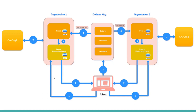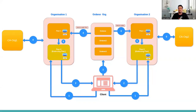A participant asks: normally there is a consensus mechanism — like proof of work — so what exactly is the consensus mechanism here in Hyperledger Fabric, and how does it work in terms of code? Pavan acknowledges it's a very good question and says he'll cover the consensus mechanism after completing the transaction flow.